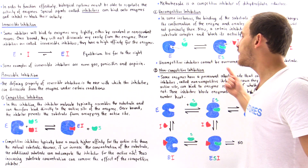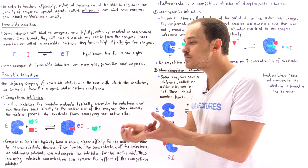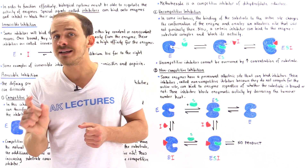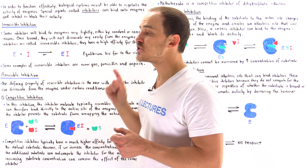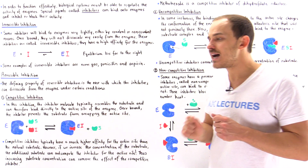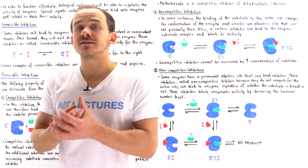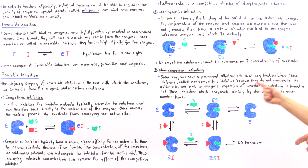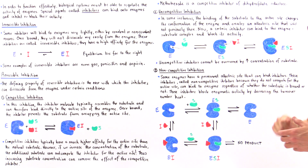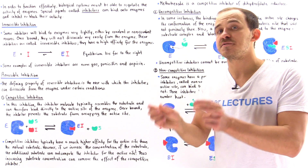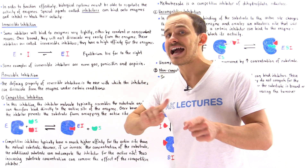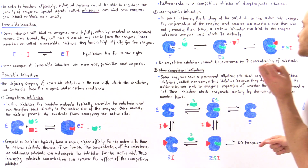In non-competitive inhibition, some enzymes will have that active site as well as an additional allosteric space regardless of whether or not that enzyme is actually bound onto the substrate inside the active site. So some enzymes have a permanent allosteric site that can bind inhibitors. These inhibitors are known as non-competitive inhibitors because they do not bind into the active site and so they do not compete for the active site with the substrate.